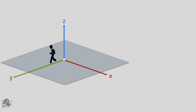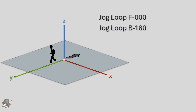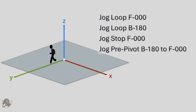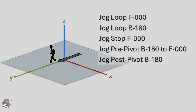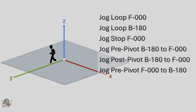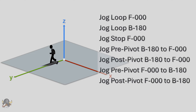The particular clips we'll create are: jog loop forward, jog loop backward, jog stop forward, jog pre-pivot backward to forward, jog post-pivot backward to forward, jog pre-pivot forward to backward, jog post-pivot forward to backward, and jog stop forward. Notice these are all aligned with the Y axis.